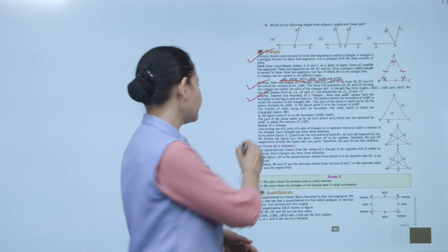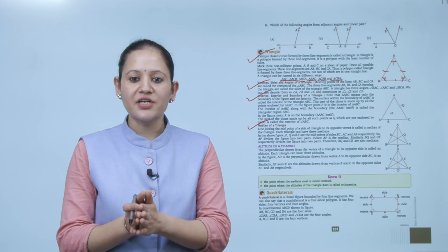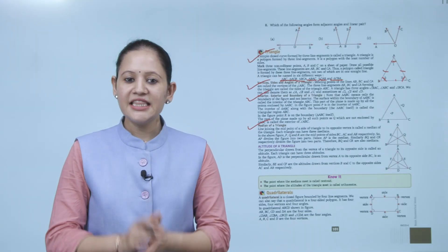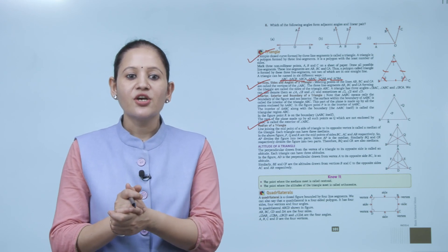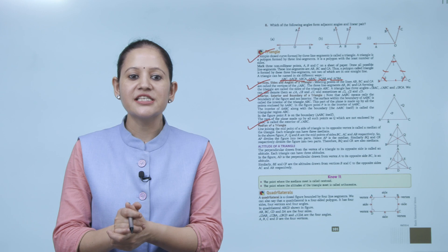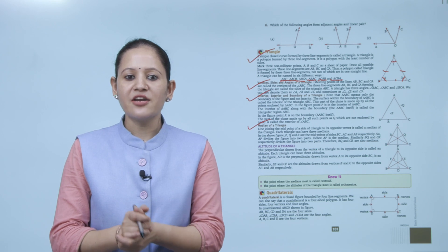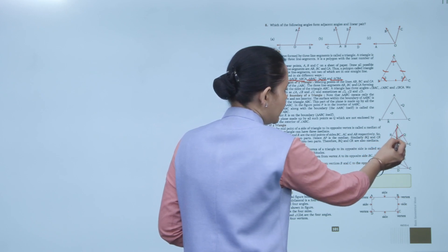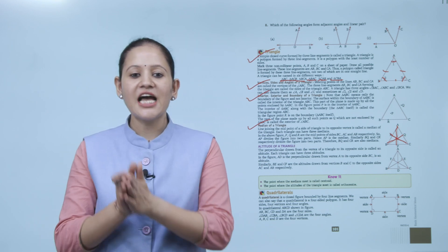Median of a triangle: the line segment joining the midpoint of a side to the opposite vertex is called the median. Each triangle has 3 medians. In the figure, P, Q, and R are midpoints of sides BC, AC, and AB respectively. So AP, BQ, and CR are the three medians of the triangle.